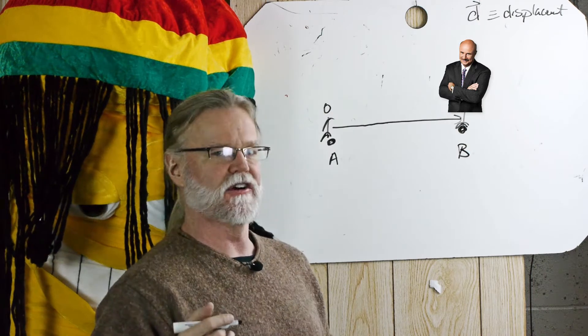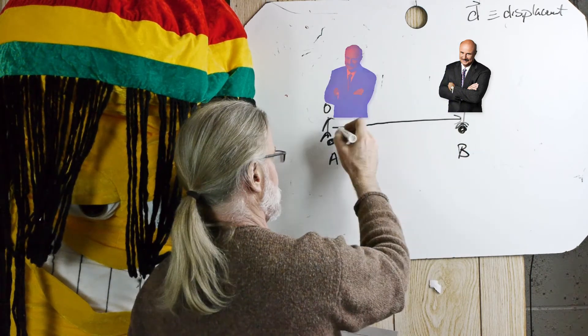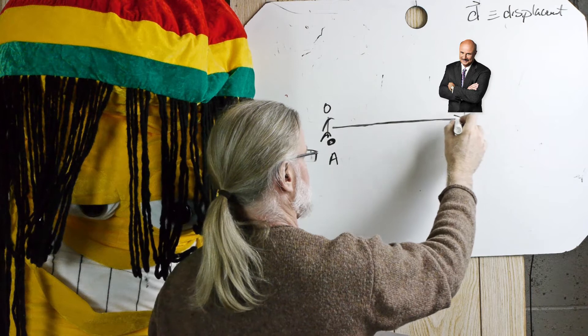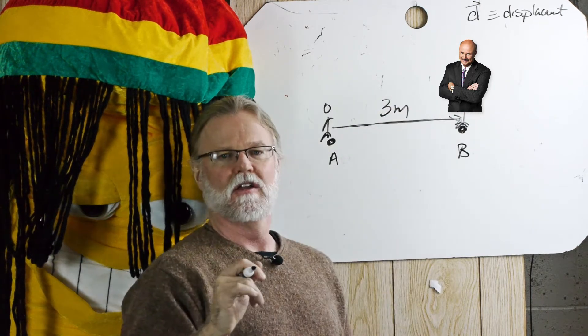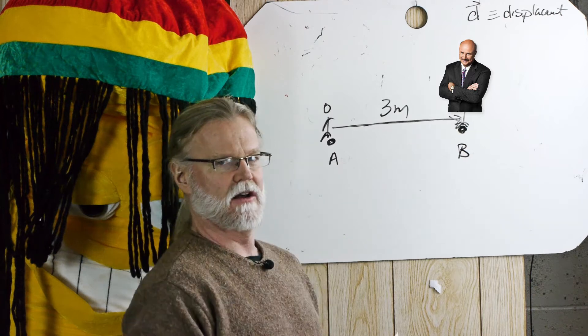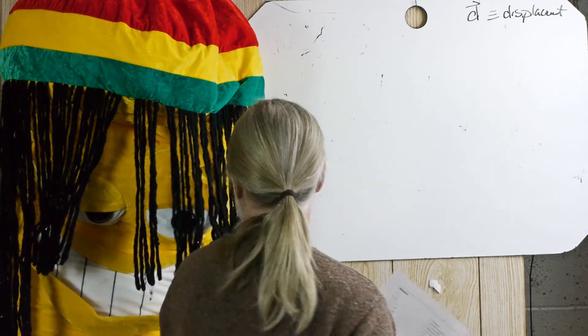That is different than if Phil had gone from B to A. So displacement would be like this, and let's say he went three meters. So Phil's displacement is three meters that way. So displacement is from where you started to where you end.